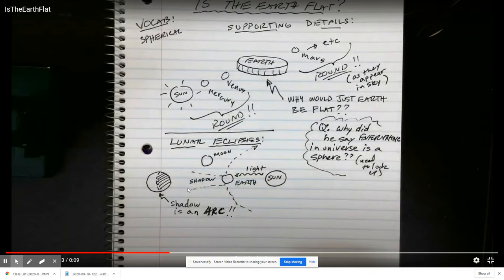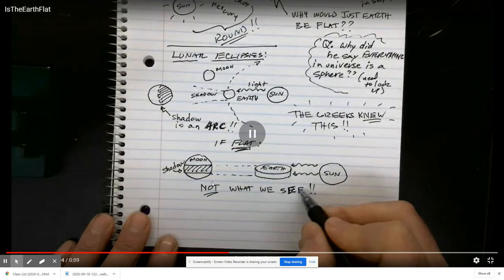And so that arc can only happen if the light is striking a round object. And if it were flat, well, then at least some of the time it should look like this, and that's not what we see.